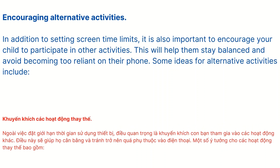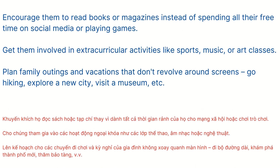In addition to setting screen time limits, it is also important to encourage your child to participate in other activities. This will help them stay balanced and avoid becoming too reliant on their phone. Some ideas include encouraging them to read books or magazines instead of spending all their free time on social media or playing games, getting them involved in extracurricular activities like sports, music, or art classes, and planning family outings that don't revolve around screens — go hiking, explore a new city, visit a museum, and so on.